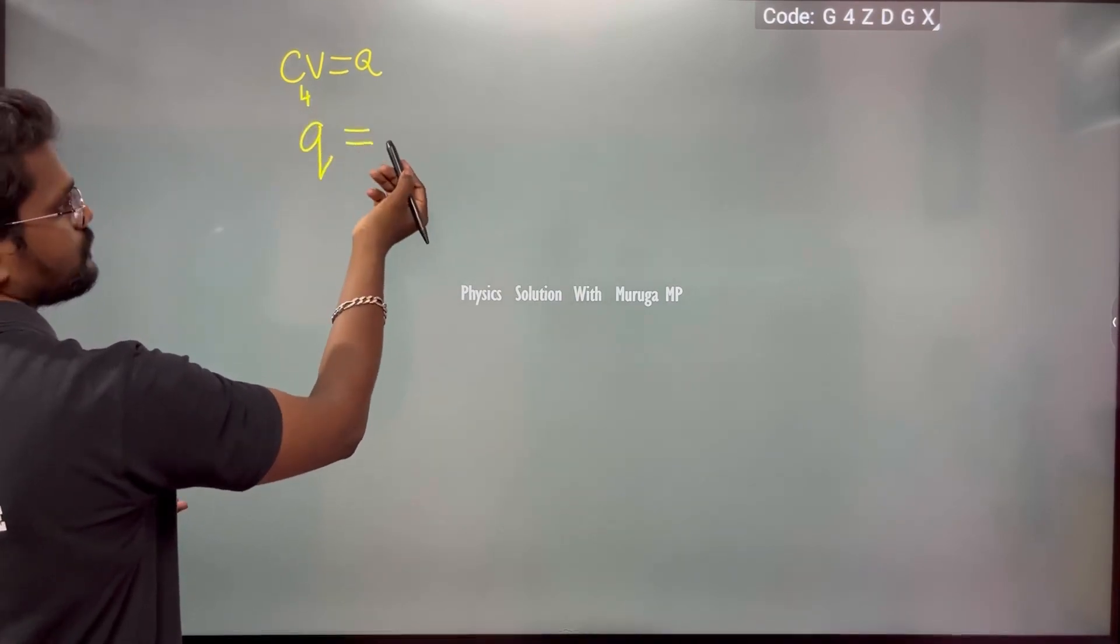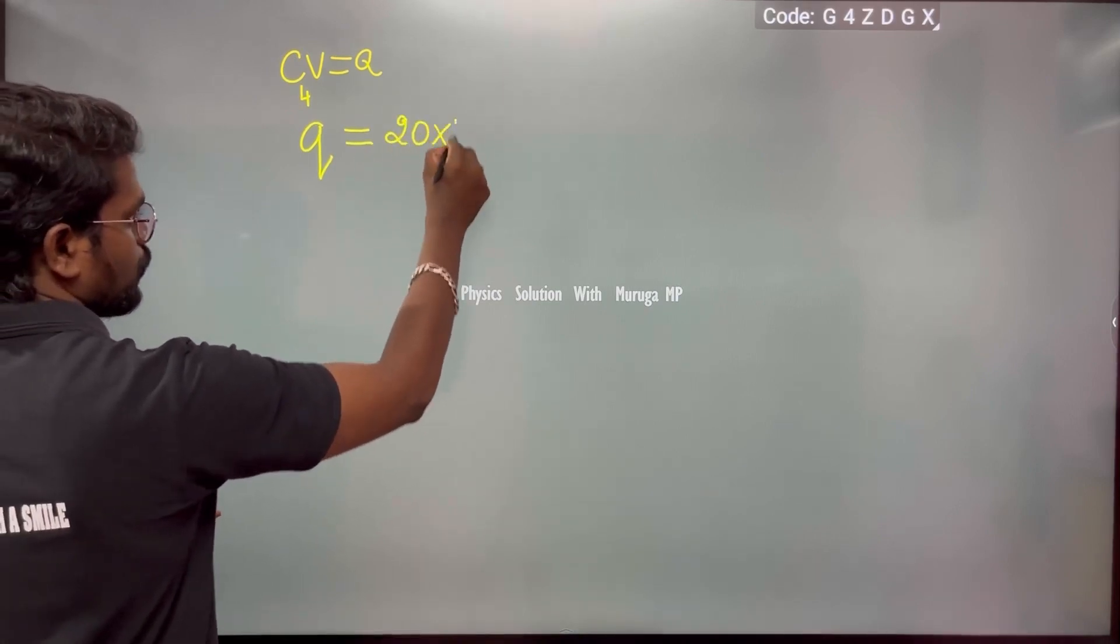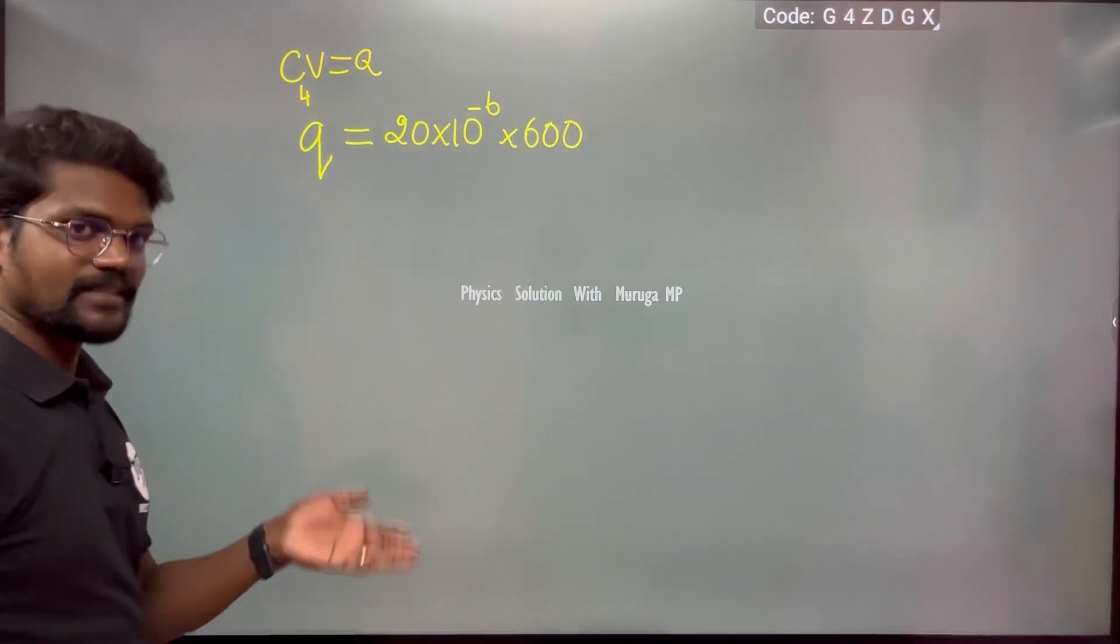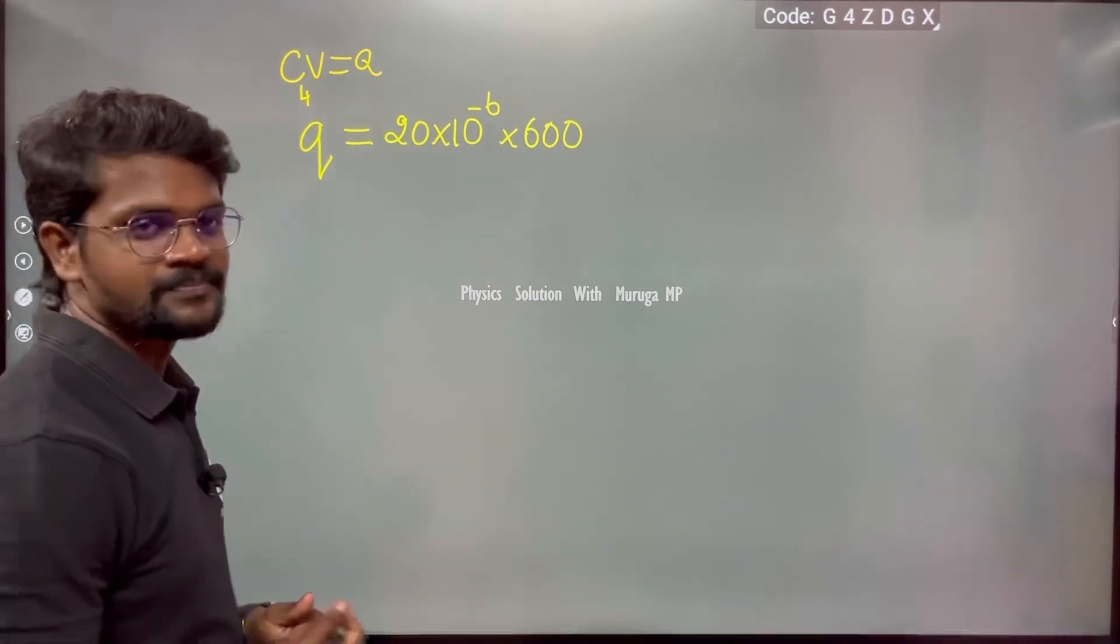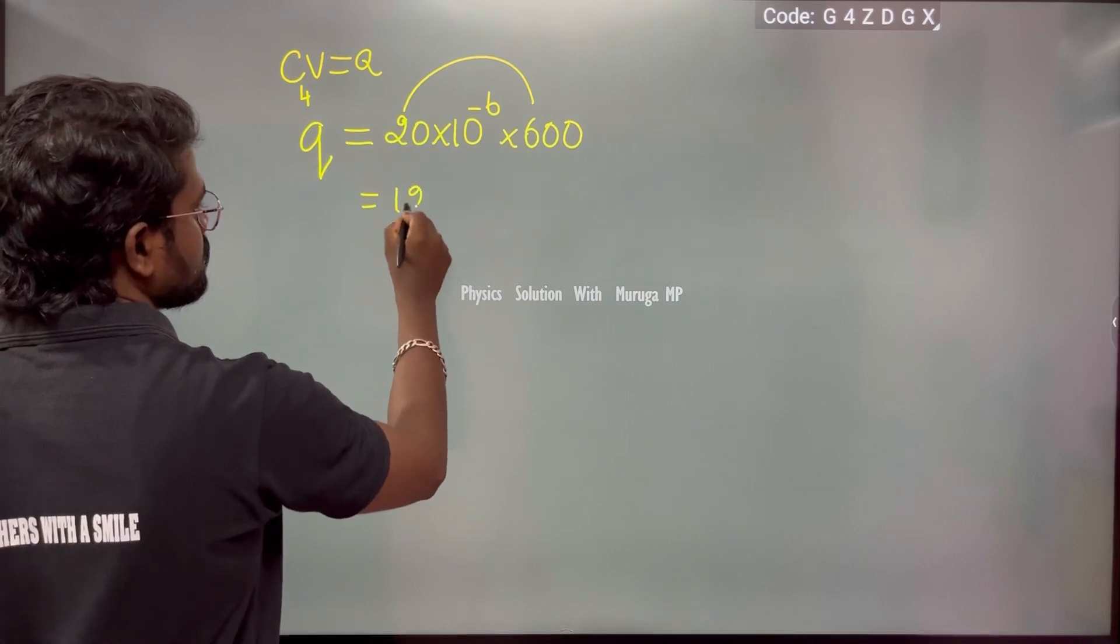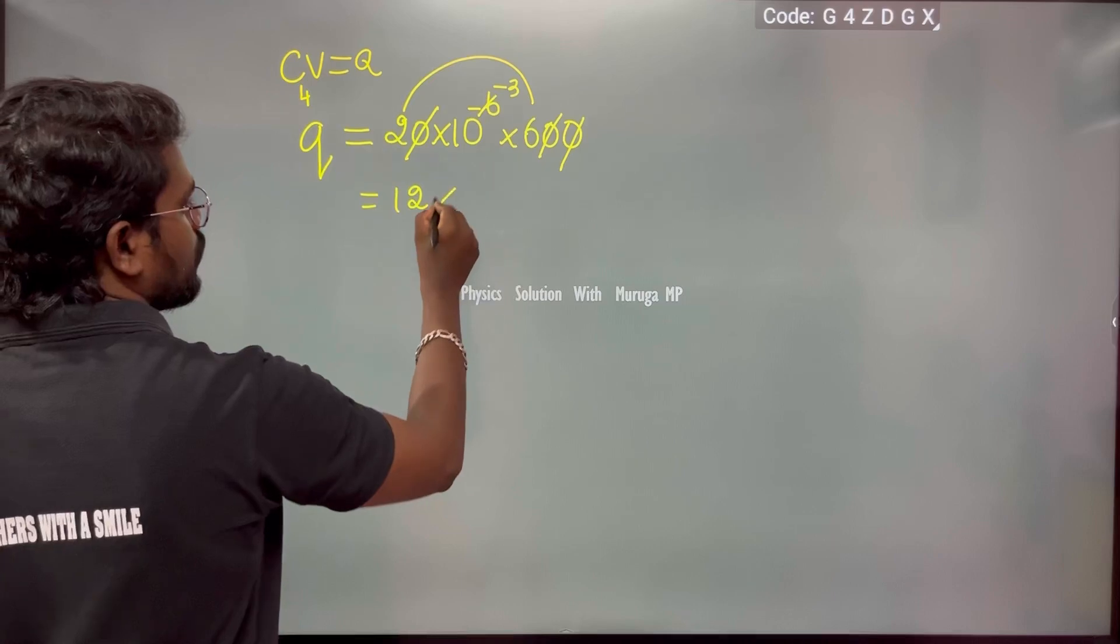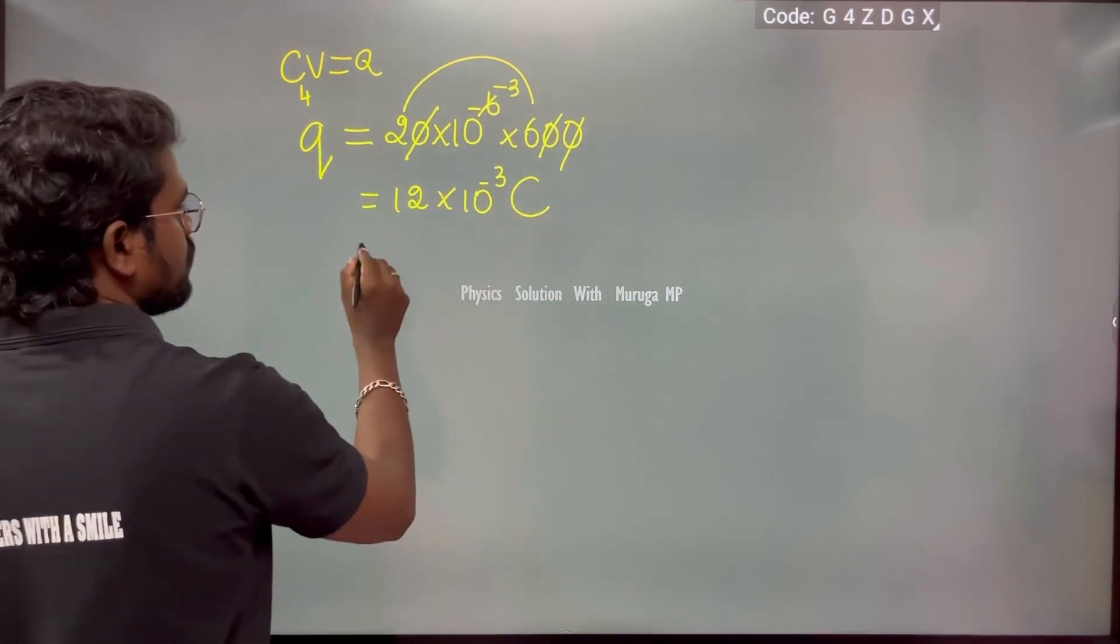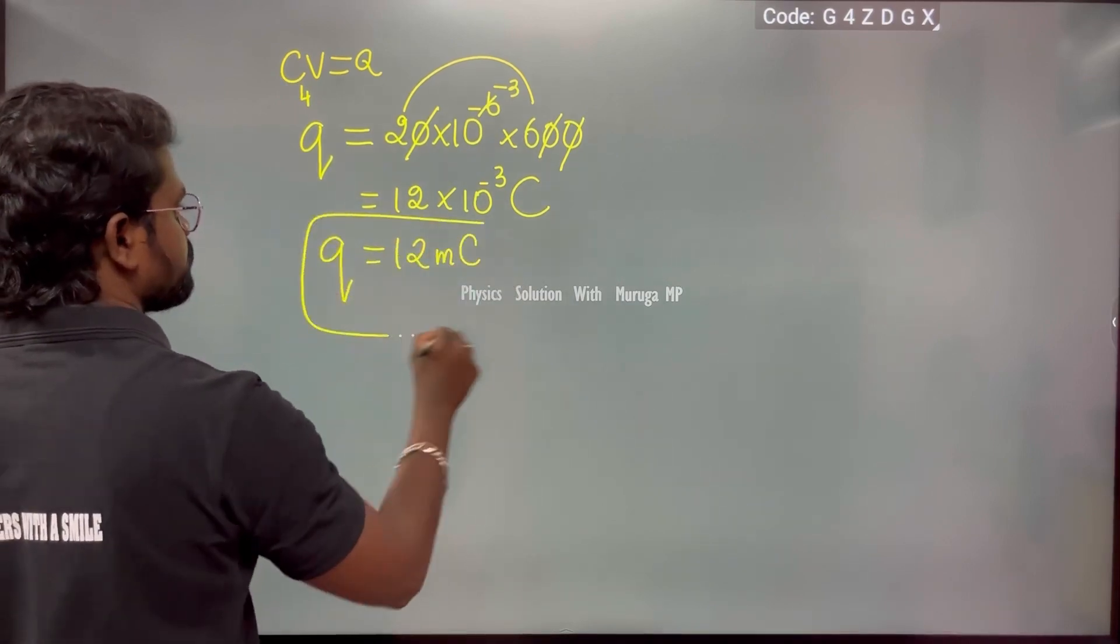For C4, q equals C4 times the supplied voltage. So 20 microfarad times 10 to the power minus 6 times 600. When we multiply this becomes 12, which is nothing but 12 millicoulombs.